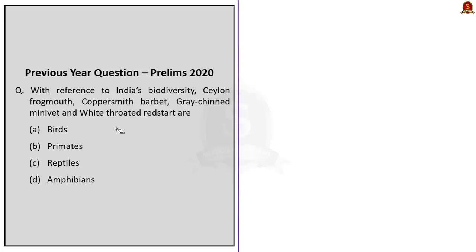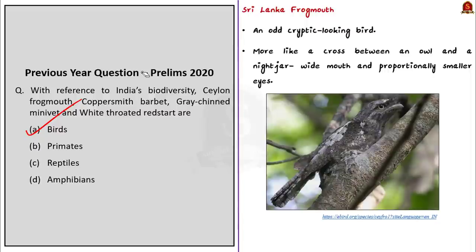Third question: With reference to India's biodiversity, Ceylon Frogmouth, Coppersmith Barbet, Grey-striped Minivet, and White-throated Redstart are — A) birds, B) primates, C) reptiles, D) amphibians. The answer is A, birds. These are direct questions and tough to guess; you can only answer accurately if you know the species mentioned.